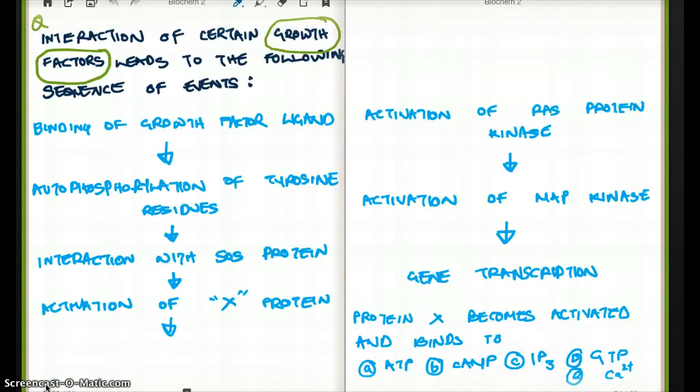Now that we have an understanding of the topic, let's go to the question and see what they were asking. The question said that interaction of certain growth factors leads to the following sequence of events, and now we are very much familiar with the different sequences. Binding of growth factor to the ligand. Yes, there was binding of growth factor to the ligand. Autophosphorylation of the tyrosine residues happened. Interaction with SOS protein. Activation of X protein. Don't know what X protein is so far. Activation of RAS protein.